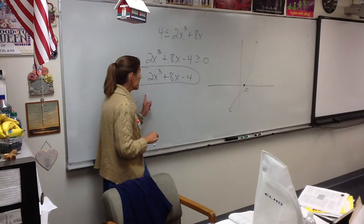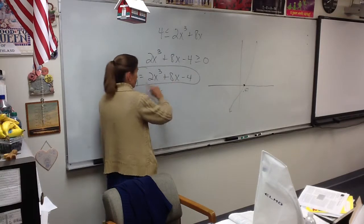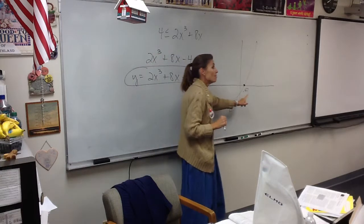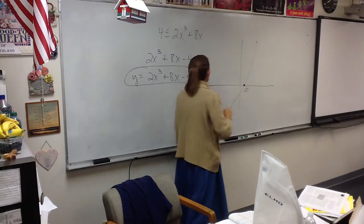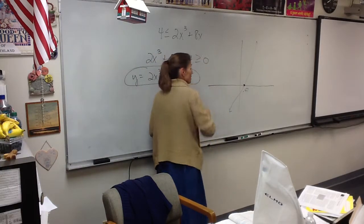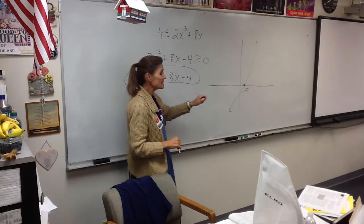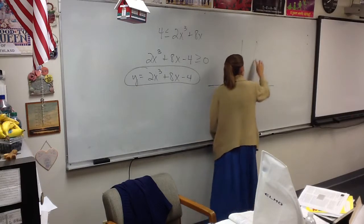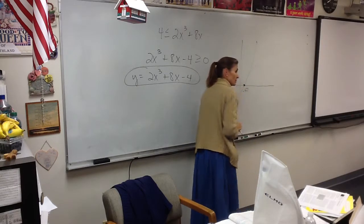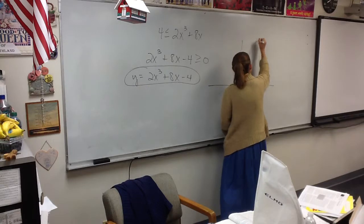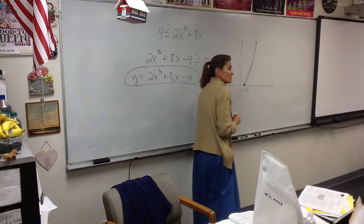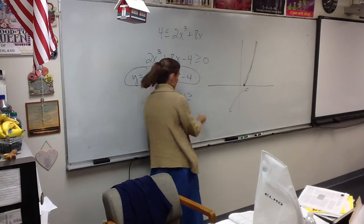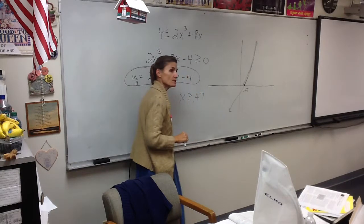Now, if this had been an equals problem, you would say .47. But it says where is it greater than or equal to 0. So that's easy. You just look at the picture. Which part of it do you look at? The part here or here? This part. This is where it's greater than 0. So what's the answer? All of the x's bigger than or equal to 0.47. That's all there is to it.